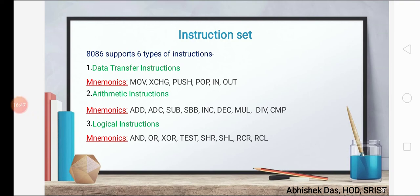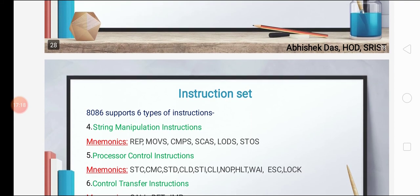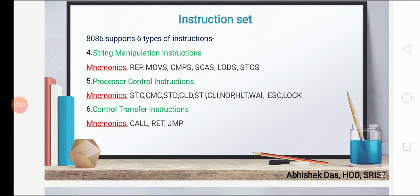Now we discuss the instruction set used for 8086 programming. 8086 supports six types of instructions. Data transfer instructions — examples: MOV, XCHG, PUSH, POP. Arithmetic instructions — examples: ADD, ADC, SUB, SBB. Logical instructions — examples: AND, OR, XOR. String manipulation instructions — examples: MOVS, CMPS, LODS. Processor control instructions — examples: CMC, CLD, LOCK.